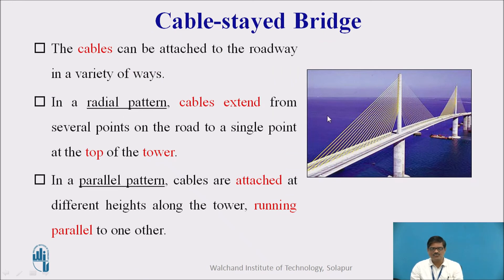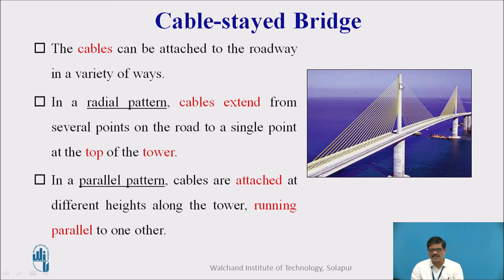The cables can be attached to the roadway in a variety of ways, forming different patterns. In a radial pattern, cables extend from several points on the road to a single point at the top of the tower — so cable lines start from different points on the road and converge to one point at the tower top. In a parallel pattern, cables are attached at different heights along the tower and run parallel to one another, meaning the cables are tied at different points along the tower rather than converging to a single point.